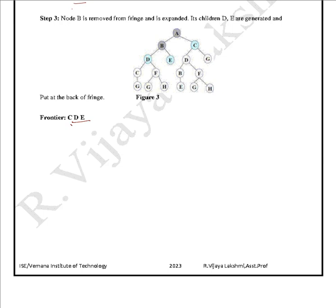Next, C is at the front of the queue. C is not the goal node — G is our goal node. We expand C, whose children are D and G. We remove C from the frontier and add D and G after the existing nodes. The frontier sequence continues level by level, as breadth first search expands all nodes at each depth before moving to the next.